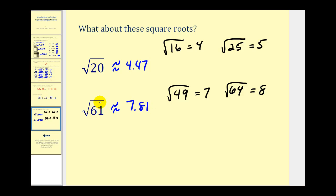To summarize: if we're taking the square root of a perfect square, it works out very nicely. But if we take the square root of a number that's not a perfect square, we're only able to get a decimal approximation. I hope you have found this introduction helpful.